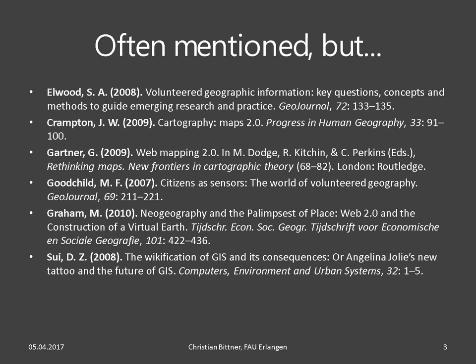Since about 2007, the topic of user-generated cartography emerged in geographic literature under several keywords like VGI, Maps 2.0, web mapping 2.0, neogeography, wikification of GIS, and several more. Interestingly, Wikimapia was mentioned as a prime example by all of the agenda-setting papers listed here, written by prominent authors such as Sarah Elwood, Jeremy Crampton, Georg Gartner, Michael Goodchild, Mark Graham, or Daniel Sui. But surprisingly, almost no empirical research has been done on Wikimapia so far.